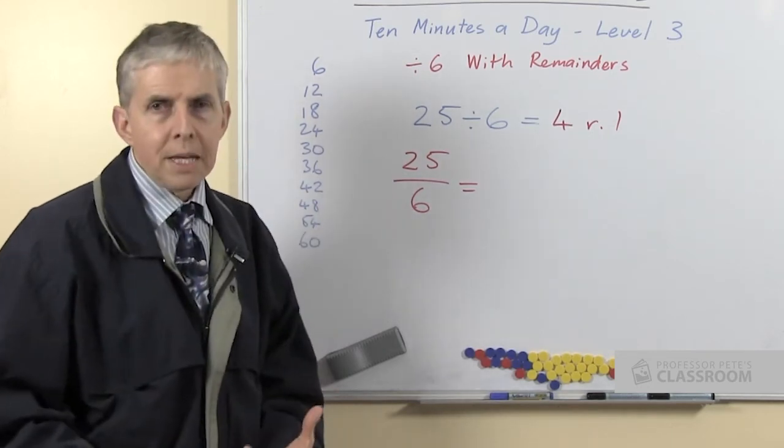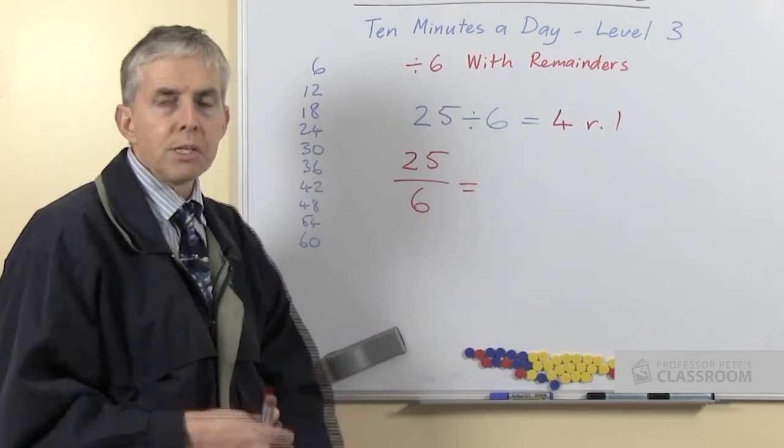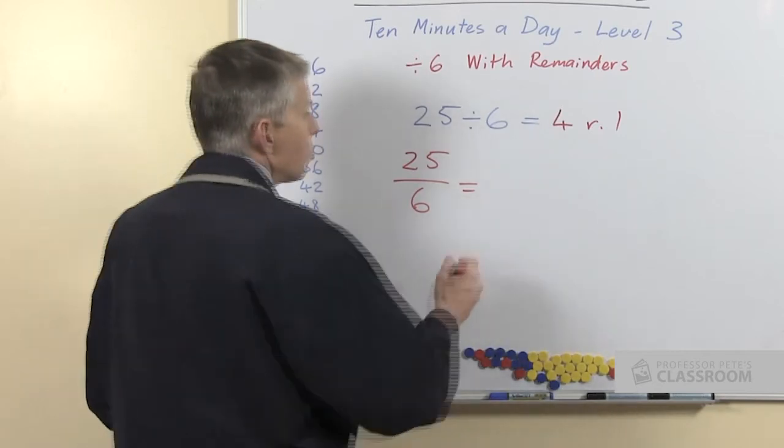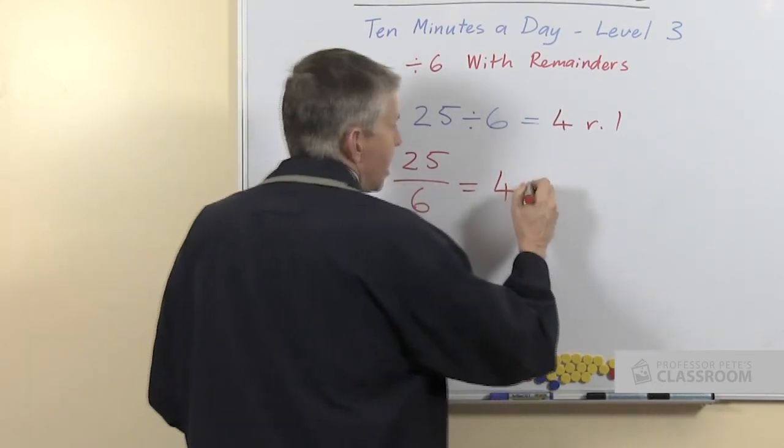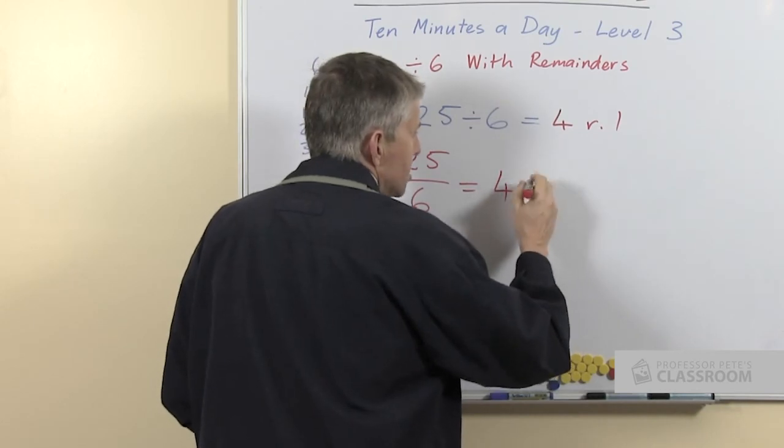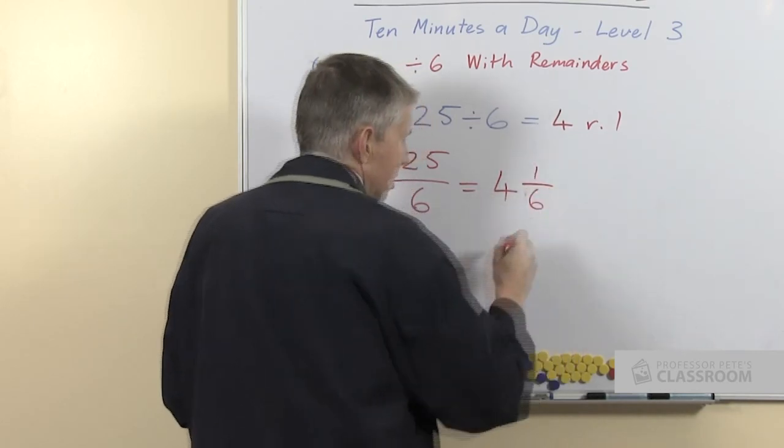25 sixths is the same as 25 divided by 6. What's the answer going to be? Of course it's going to be 4 wholes, because 4 times 6 is 24 and there's 1 left, and so as a fraction of course we write that as 1 sixth.